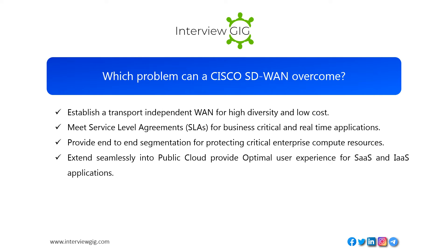Which problems can Cisco SD-WAN overcome? It can establish a transport-independent WAN for high diversity and low cost, meet service-level agreements (SLAs) for business-critical and real-time applications, provide end-to-end segmentation for protecting critical enterprise compute resources, and extend seamlessly into public cloud to provide optimal user experience for SaaS and IaaS applications.